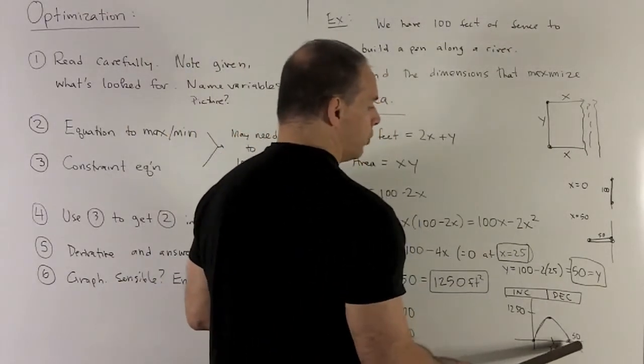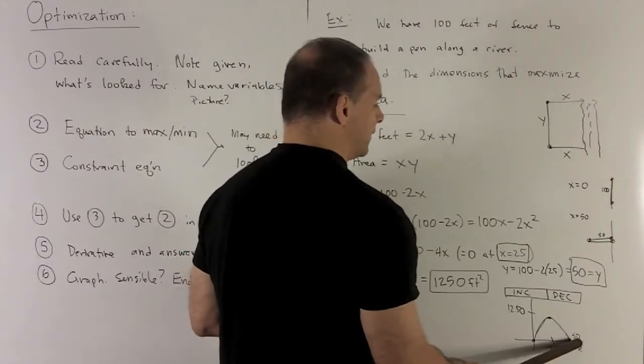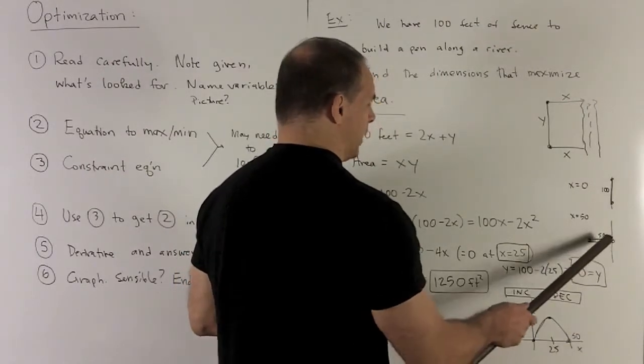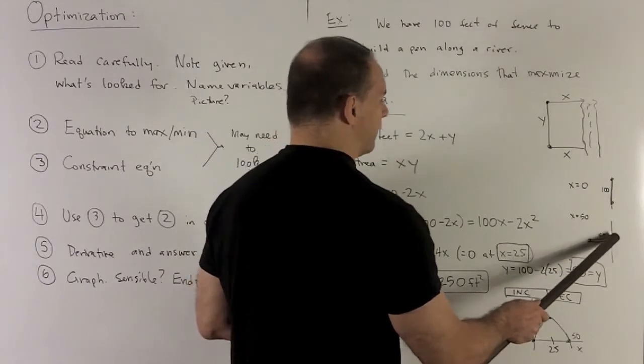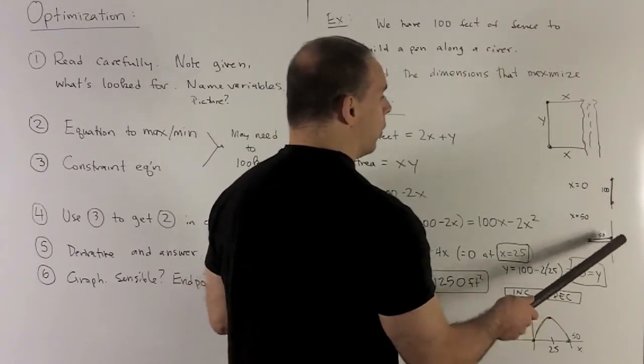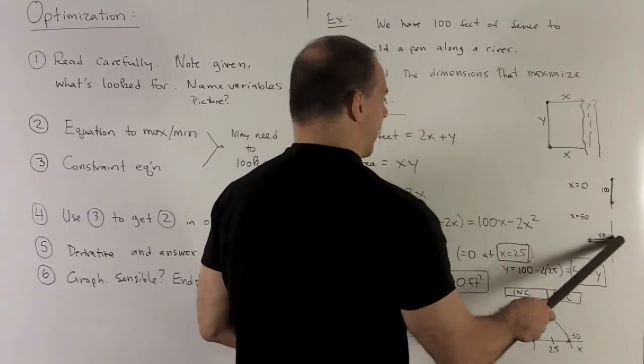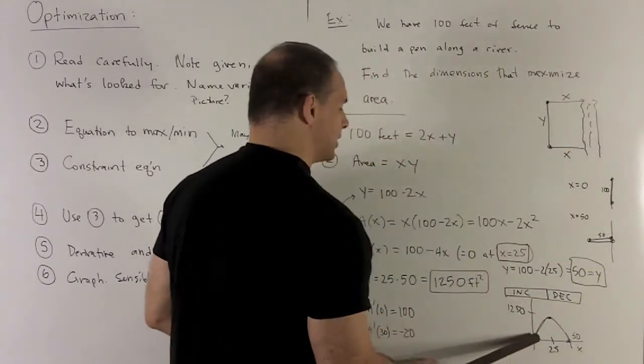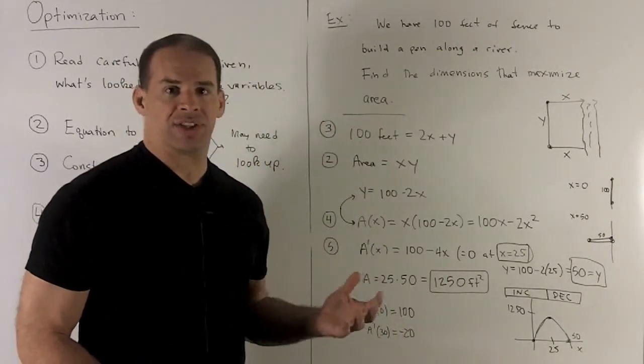At the other extreme, we have x equals 50. We'll think about what's happening there. If x equals 50, y is equal to 0, which means we're just going to take the fence, go out 50 feet, and then come back 50 feet, and there's going to be no y dimension to this. So this thing will also have area 0, as we would expect, because we're hitting the x-axis. There, a of x is equal to 0.